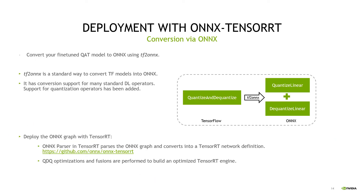Once fine-tuning is completed, we convert the fine-tuned model into ONNX using TF2ONNX converter. TF2ONNX is a standard way to convert TensorFlow models into ONNX representations and has conversion support for many standard deep learning operators. We have also added support for converting quantization operators. A quantization operator in TensorFlow is represented by the Quantize and Dequantize API, which is then converted into two separate ops named Quantize Linear and Dequantize Linear in ONNX. Once we have the ONNX graph, we use the ONNX parser in TensorRT, which parses the ONNX model and converts it into an optimized TensorRT engine. The QDQ optimizations and fusions are performed internally, which are then used to build the TensorRT engine.